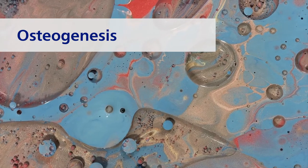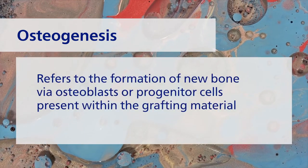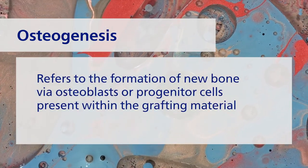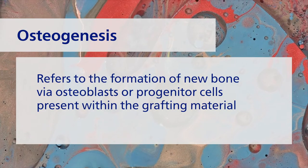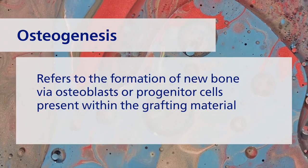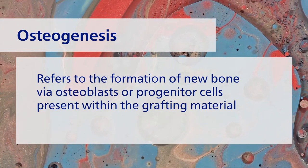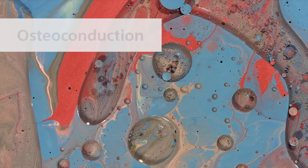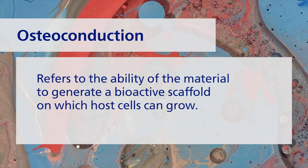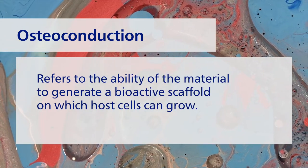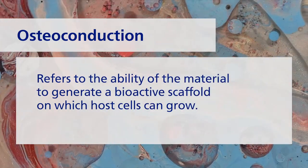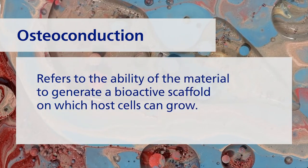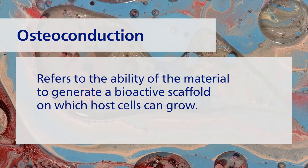Osteogenesis refers to the formation of new bone via osteoblasts or progenitor cells present within the grafting material. Osteoconduction refers to the ability of the material to generate a bioactive scaffold on which host cells can grow.